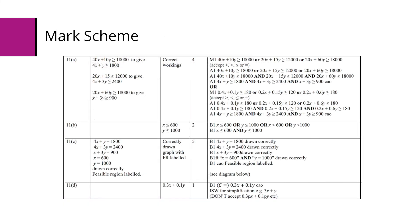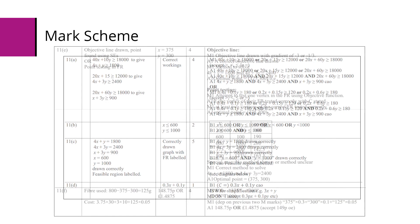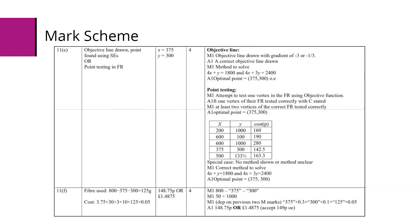Here's the mark scheme. You can see there's alternate methods for part A. For part E, there's marks given for using the objective line method or point testing. For part F, the price can be given in pounds or pence.